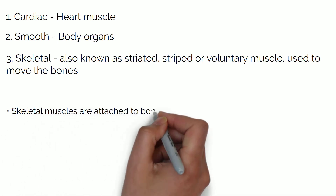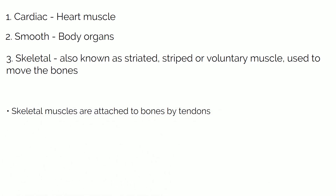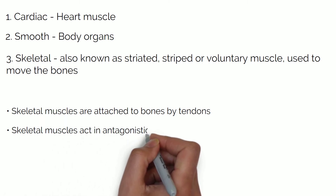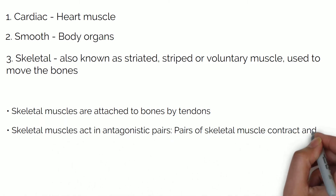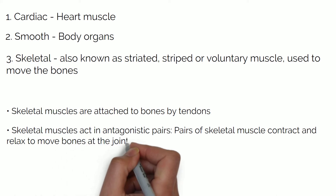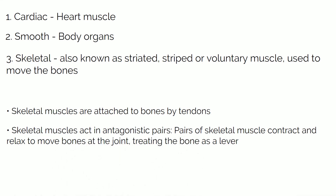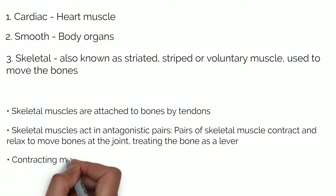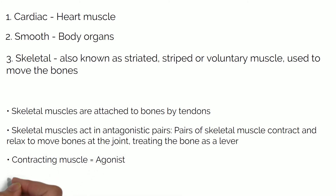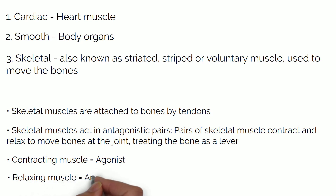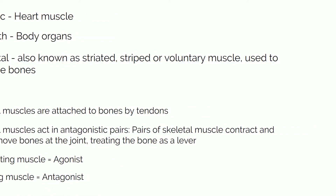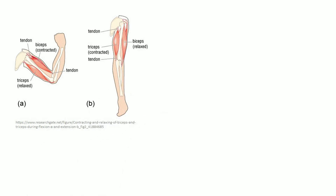Skeletal muscles are attached to bones by tendons. Skeletal muscles act in antagonistic pairs. These pairs of skeletal muscle contract and relax to move bones at the joint, treating the bone as a lever. The contracting muscle is known as the agonist and the relaxing muscle is known as the antagonist. For example, biceps and triceps muscles are attached by tendons to the bones of the lower arm and control movement — one relaxes while the other contracts.